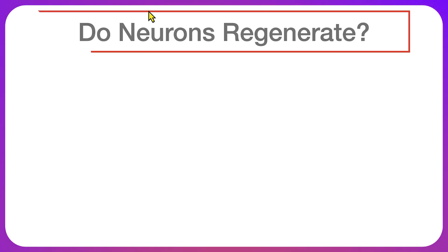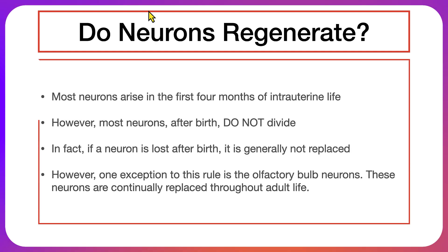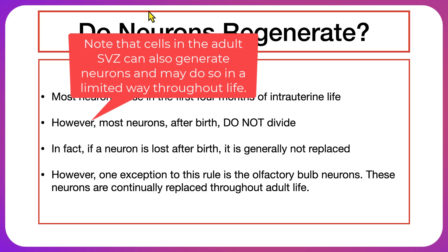The first question that we're going to answer is whether neurons regenerate, and the answer to this question is generally no. Most neurons are going to arise within the first four months of intrauterine life. However, most neurons after birth do not divide. In fact, if a neuron is lost after birth, it generally is not going to be replaced. However, one exception to this rule: olfactory bulb neurons. The olfactory bulb neurons are going to be continually replaced throughout adult life.